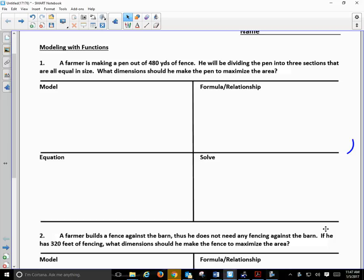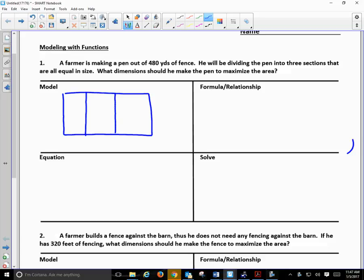If it was a circle, it wouldn't be different, but we're going to make it a rectangle. He's making a pen. He's going to divide that area up into three equal sections. There's a phrase in this sentence that is really driving the problem. As you read it, what is driving the problem? What is that objective? Maximize the area. This is what we need to focus on.